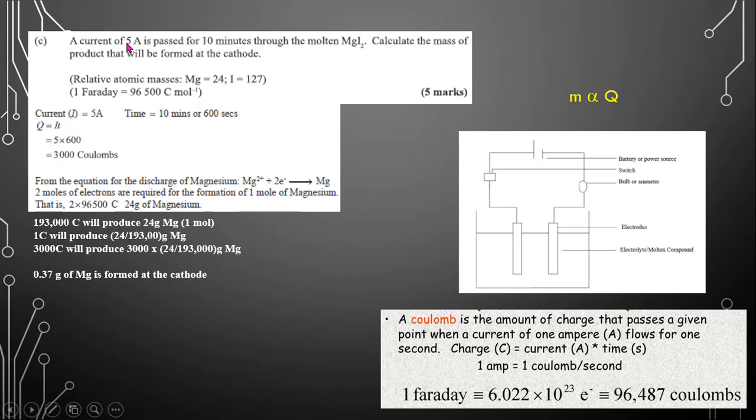So we are given the current I, and we are given T, 10 minutes. You have to convert it to seconds. And it works out to be 3,000 coulombs. So one mole of electrons has a charge of 96,500 coulombs. It's also given here. That is one Faraday.